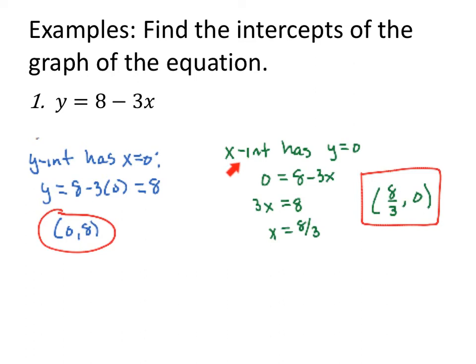But I want to find all the intercepts, so I'm going to find the x-intercept as well. The x-intercept has y equals 0. So I replace 0 on the left and I solve for x. My first step, I'm going to add 3x to both sides. Divide by 3. My x-value is 8 thirds. My y-value was assumed to be 0. Always the intercepts, one of the coordinates will be 0.